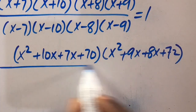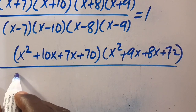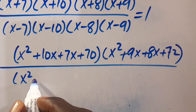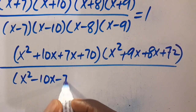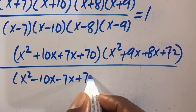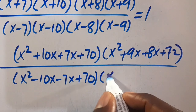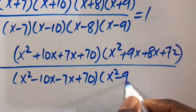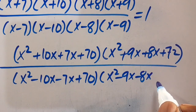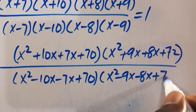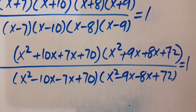Then divided by: this times this gives x squared minus 10x minus 7x plus 70. The second one will also give us x squared minus 9x minus 8x plus 72. We close it and set everything to equal 1.